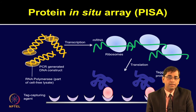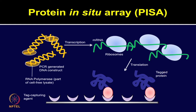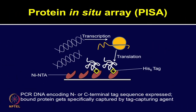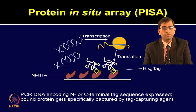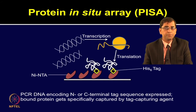As shown in the slide, by using cell-free expression system, DNA is able to produce protein through transcription and translation processes containing histidine tags, which adhere to the nickel-NTA surface. Overall, the PISA method utilizes PCR DNA which encodes N- or C-terminal tag sequences and then transcribes and translates the cDNA of interest into the protein. This protein synthesized after the cell-free expression gets specifically captured by the tag capturing agent.